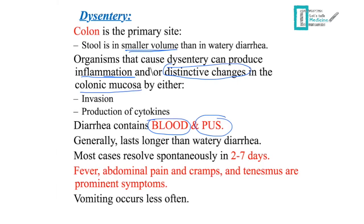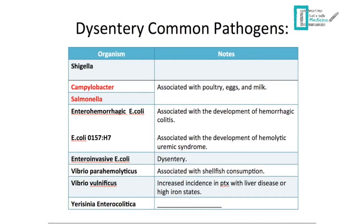Dysentery generally lasts longer than watery diarrhea — about two to seven days compared to one to three days for watery diarrhea. Fever, abdominal pain and cramps, and tenesmus are prominent symptoms; vomiting occurs less often. Common pathogens include Shigella, Campylobacter, and Salmonella. Note that Salmonella causes dysentery more often than watery diarrhea but can cause both.